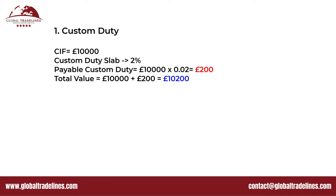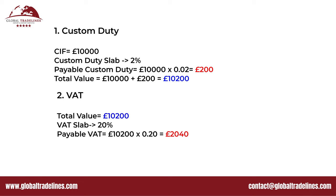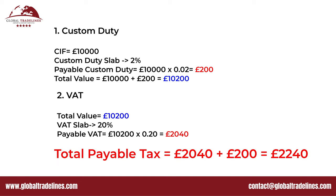Now let's take an example. Assume your CIF value is £10,000 and your product falls under the 2% custom duty category. So you will be paying £200 in customs duty, making your total value of products £10,200. The VAT will be calculated on this new total value of £10,200 and not on the CIF value. So 20% of £10,200 will be £2,040, making the total payable tax to HMRC £2,240.